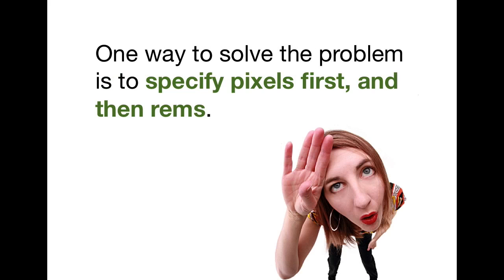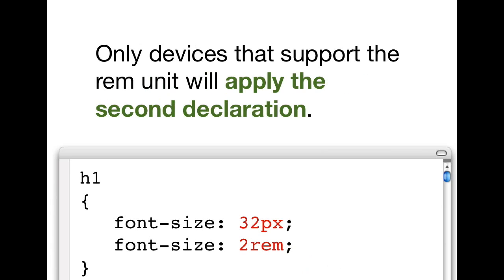One way to solve the problem is to specify pixels first and then rems. The great thing about this is that only devices that support the rem unit will apply the second declaration. So here we have an h1 and it's first set to font-size 32px and then font-size 2 rem. So modern browsers that support the rems will apply the second declaration, whereas older browsers like IE 6 to 8 will apply the first declaration.